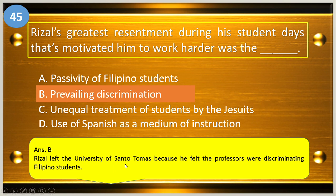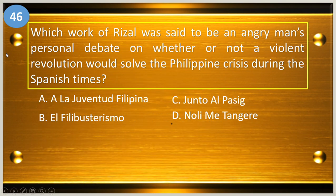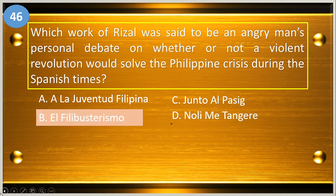Rizal left the University of Santo Tomas because he felt the professors were discriminating against Filipino students. Number forty-six: which work of Rizal was said to be an angry man's personal debate on whether or not a violent revolution would solve the Filipino crisis during the Spanish times? A, A la Juventud Filipina; B, El Filibusterismo; C, Junto al Pasig; and D, Noli Me Tangere. The answer is letter B, El Filibusterismo.